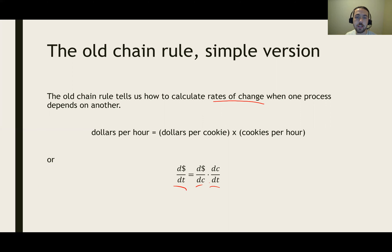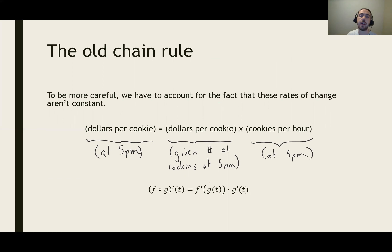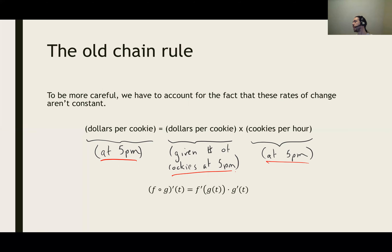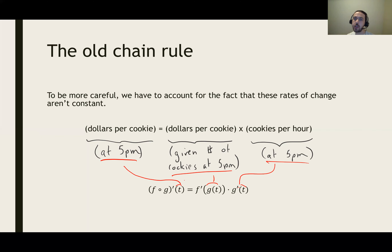That doesn't look exactly like the chain rule because we have to take into account the fact that those rates of change aren't constant — people get sick of eating cookies and you get sick of making them. So if I really want to know the rate of change at 5 p.m., I have to take into account what my rate of production is at 5 p.m., and I also have to know how many cookies I've produced at 5 p.m. so that I can calculate the amount of money I'll be able to get for them at that particular point in time. That kind of information gets fed into the chain rule — it tells you where you're supposed to evaluate the derivative.